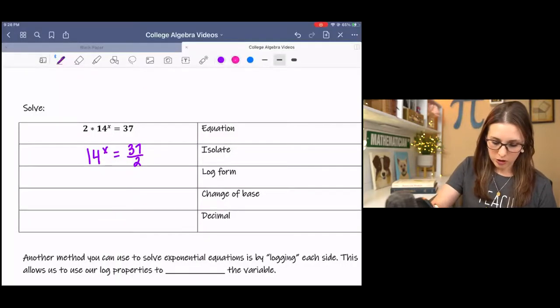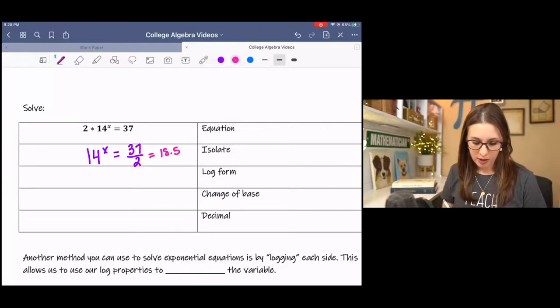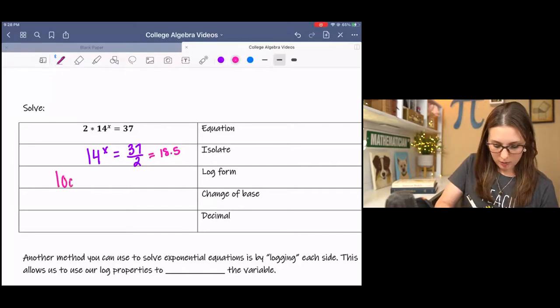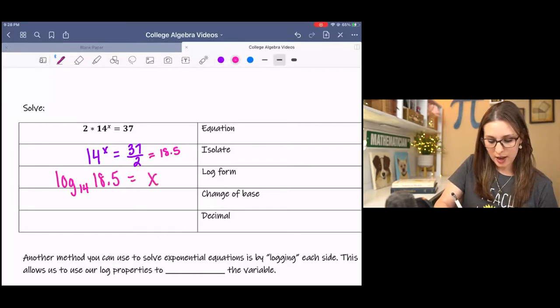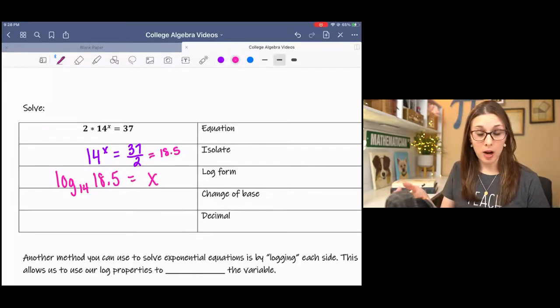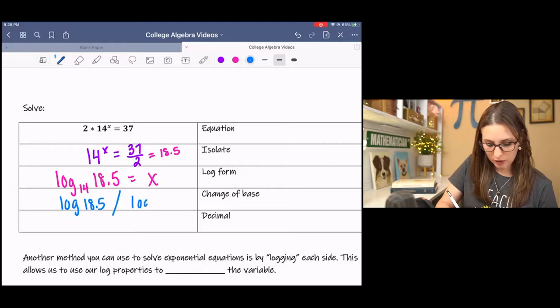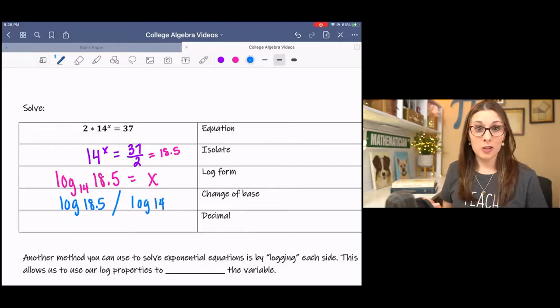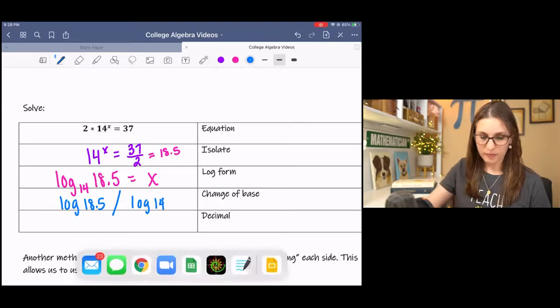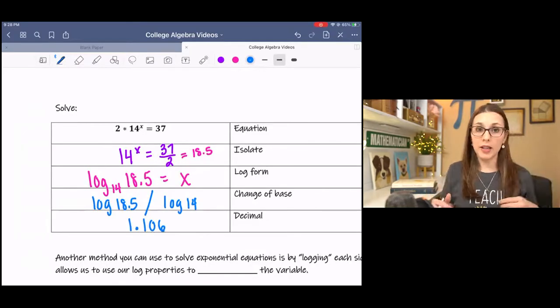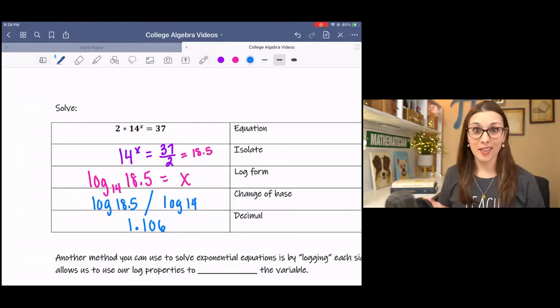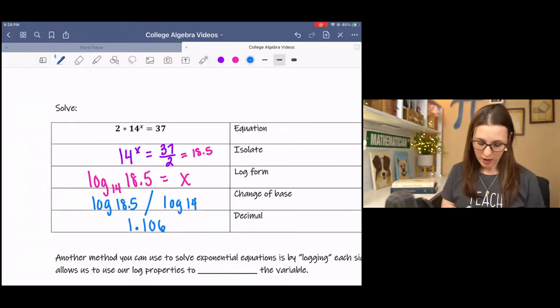We could change this 37 over 2 to 18.5. That would be fine. And then log form says log base 14 of 18.5 is x. X is isolated. So now we can use our change of base, which is log 18.5 divided by log 14. And then you just type it in. And you should get about 1.106. And that's all. Super simple. Not too bad.